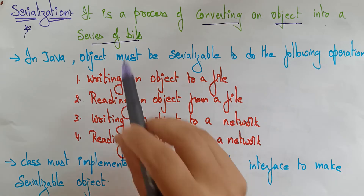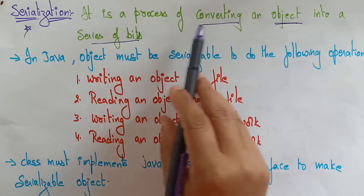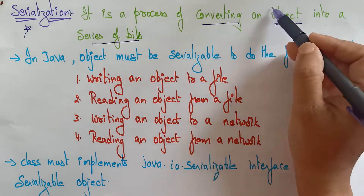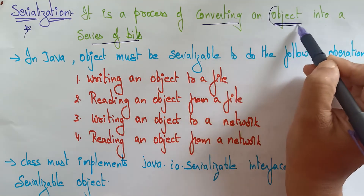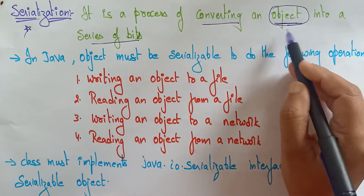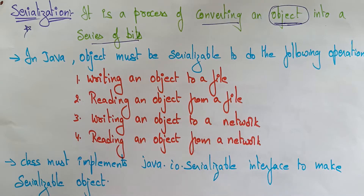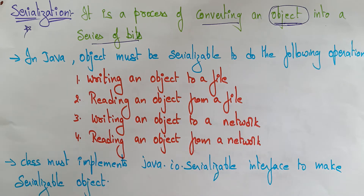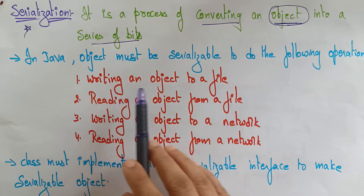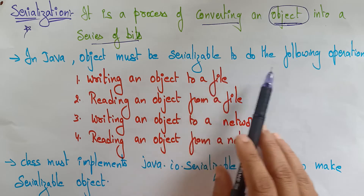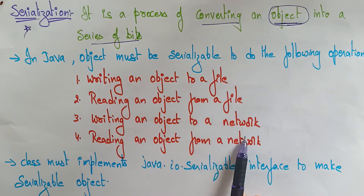Serialization is a process of converting an object — whatever object that we have created — into a series of bits. In Java, an object must be serializable to do the following operations.